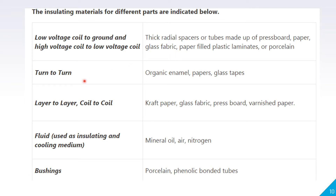Between one turn and another, the insulation used is organic enamel, paper, and glass tape. Layer or coil-to-coil insulation is provided by craft paper, glass fabric, pressboard, and varnish paper. The insulating oil used in a transformer is mineral oil, and the gases that can be used are air and nitrogen. Bushings are generally made of porcelain.